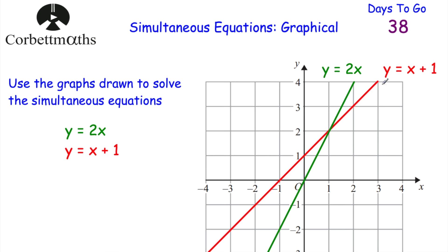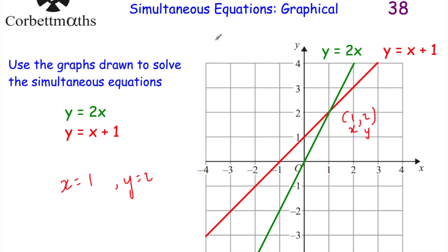The two lines clearly meet at the point (1, 2). So x-coordinate is 1 and y-coordinate is 2. That gives us our solution: x equals 1 and y equals 2. Those are the solutions to our simultaneous equations. So if we want to solve simultaneous equations graphically, all we need to do is draw their graphs and find where they intersect — and where they intersect will be the solution.